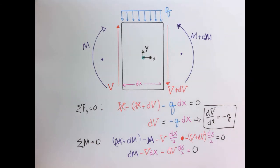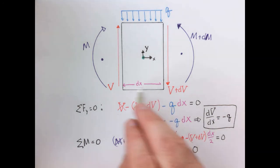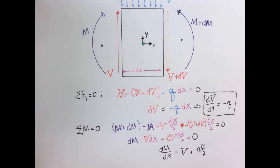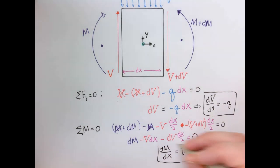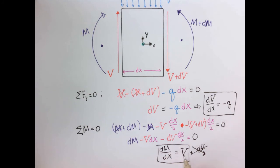Rearranging and taking the limit as dx approaches zero, the term involving dV times dx/2 vanishes. We're left with the simple expression that dM/dx = V: the derivative of the moment diagram equals the shear. Combined with our earlier result, we have: dV/dx = -Q and dM/dx = V.